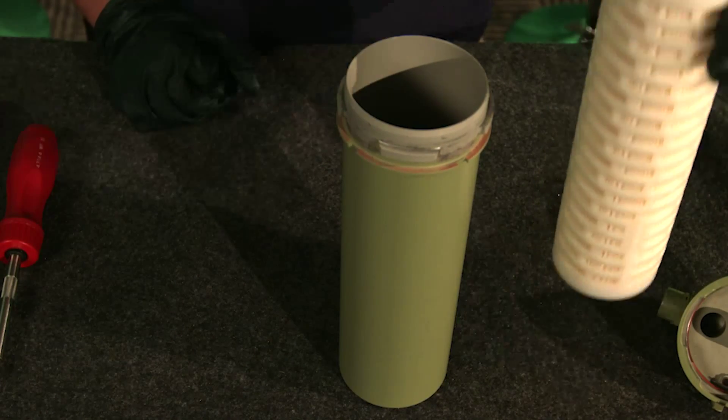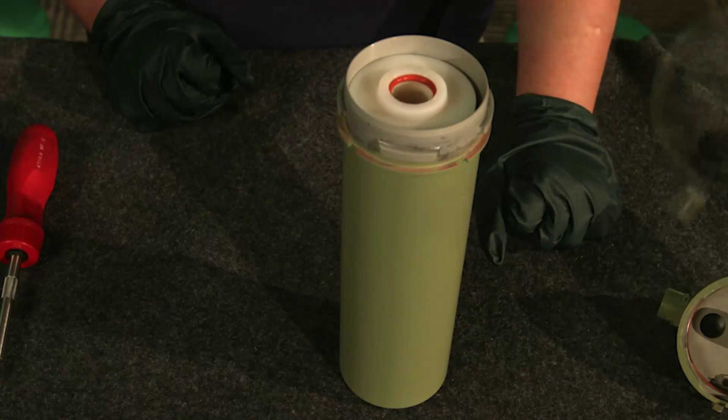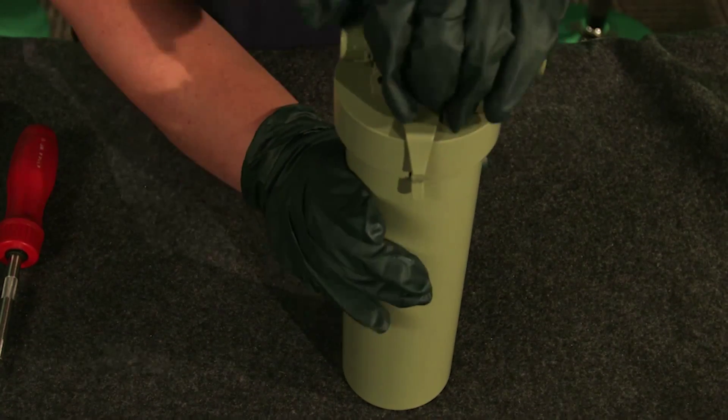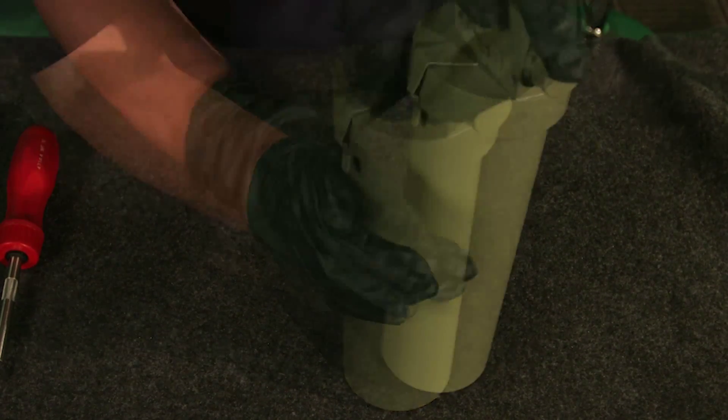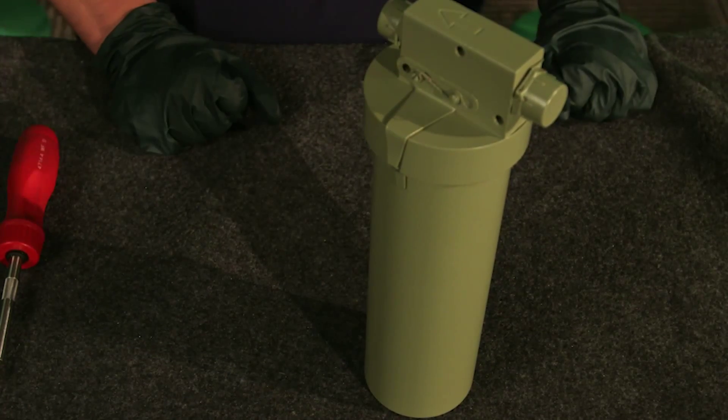To begin installing the single filter element, install the filter element in the filter bowl. Install the filter head on the filter bowl. Make sure that the clip is correctly installed in the filter bowl slot.